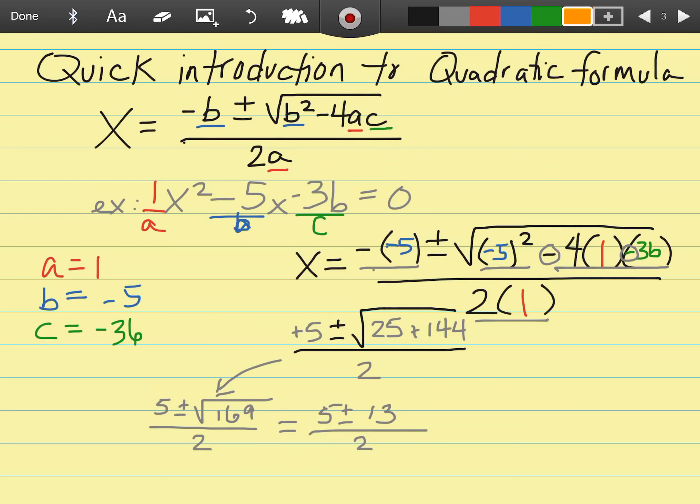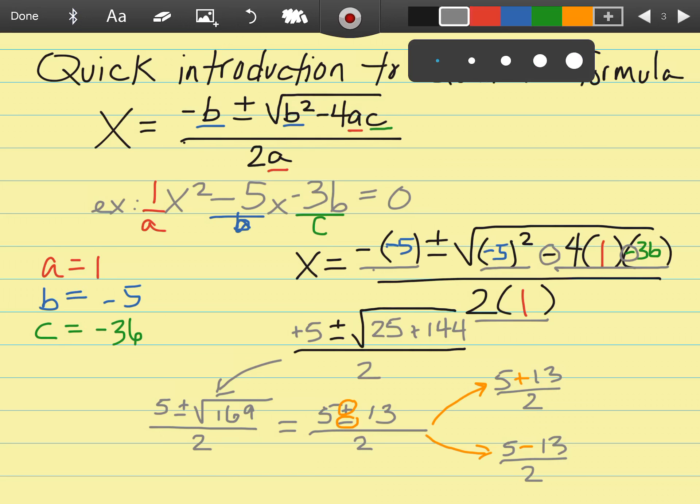Don't forget that this plus and minus is two separate answers, so here's how I'm going to get those two separate answers. On the top I'm going to say 5 plus 13 divided by 2, and on the bottom I will say 5 minus 13 divided by 2. The last step of reducing them both: 5 plus 13 is 18, 18 divided by 2 is 9. Down below, 5 minus 13 gives me negative 8 divided by 2, which is negative 4.